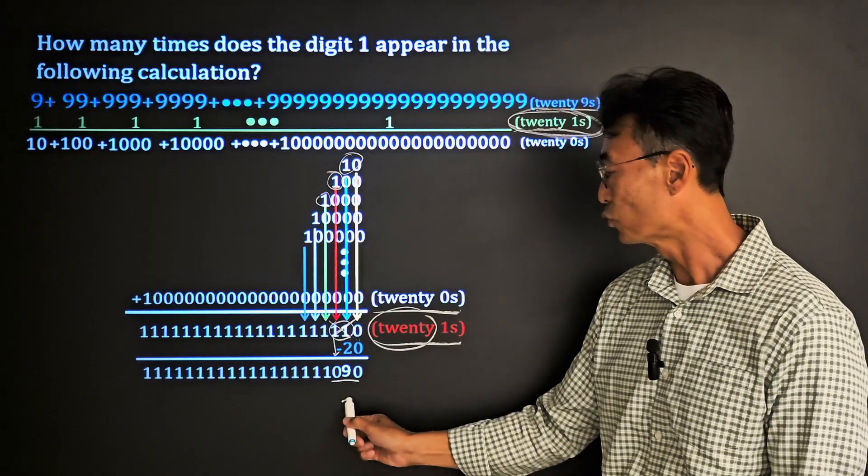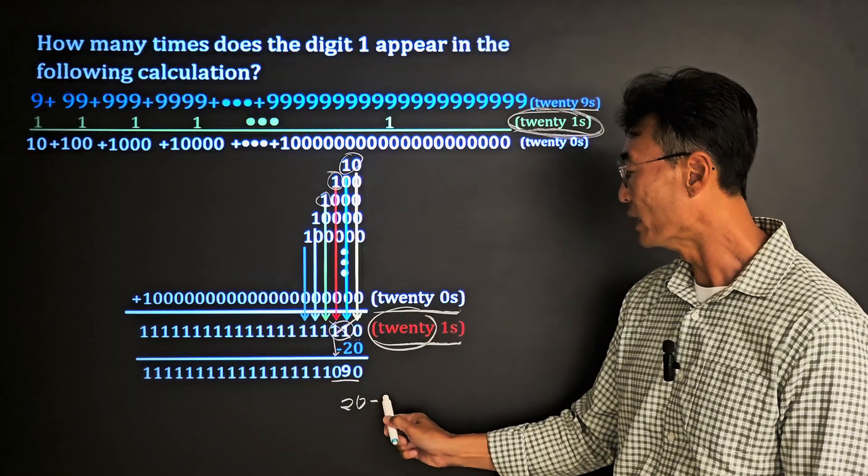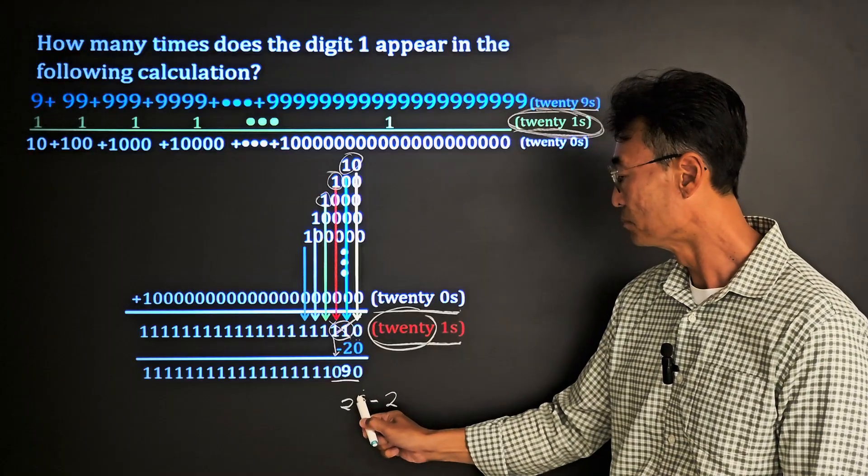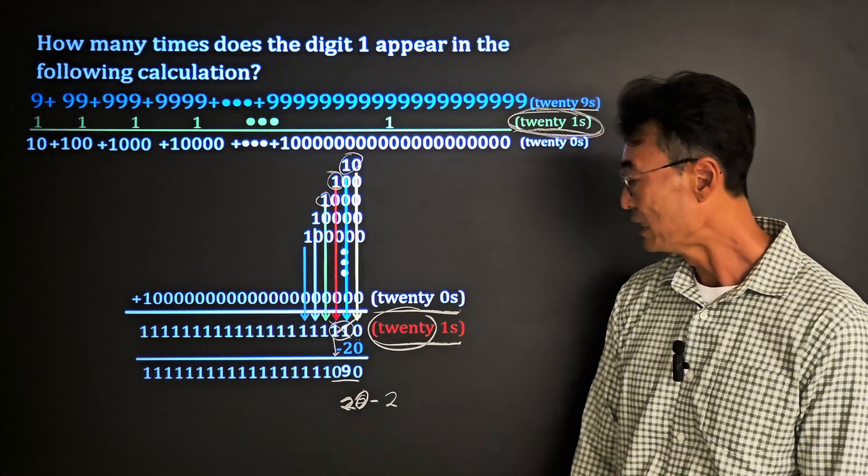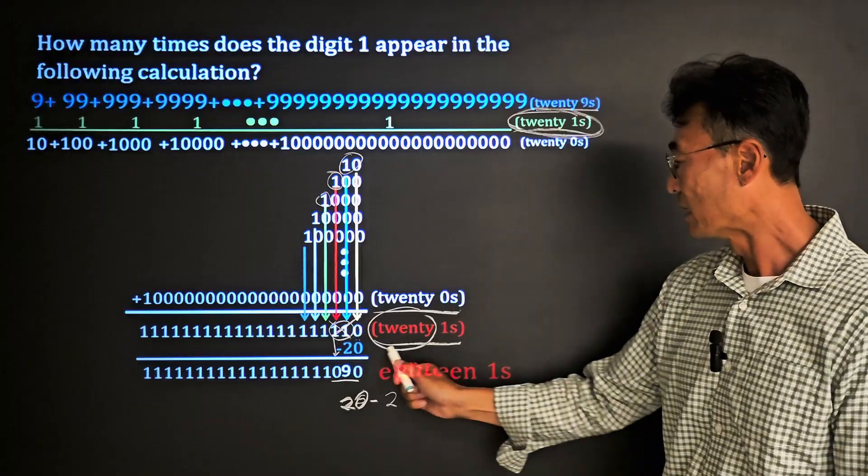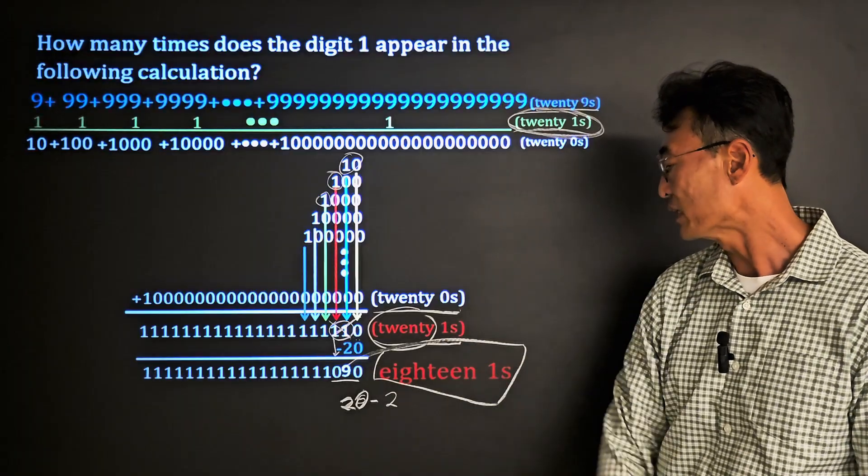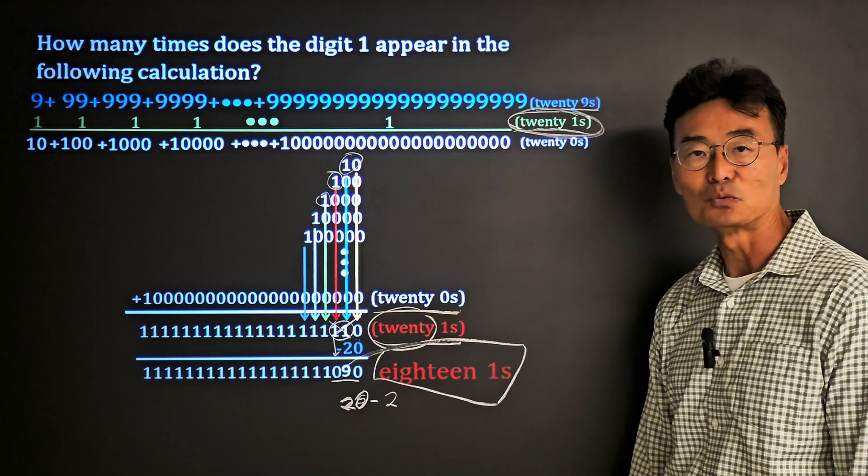So if we take 20, take away the two extra ones that we have, then we end up getting the final answer or the correct answer of 18 ones.